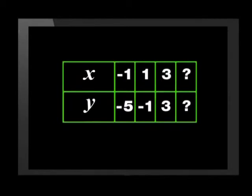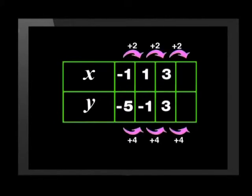Hmm, let's see. Oh, I see. There is a pattern. As the x's go up by 2, the y's go up by 4. So 2 up from 3 is 5 and 4 up from 3 is 7.